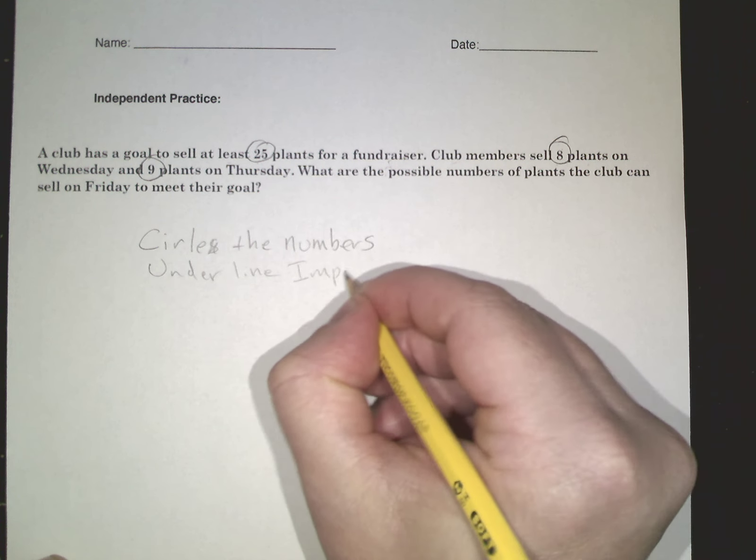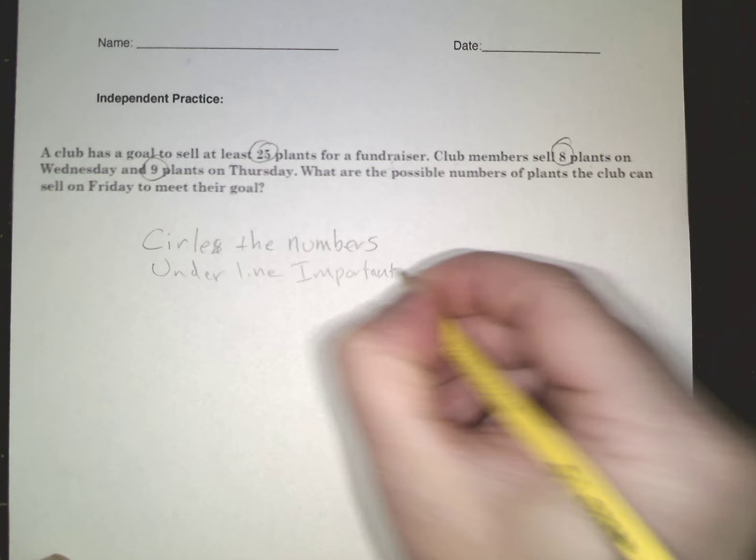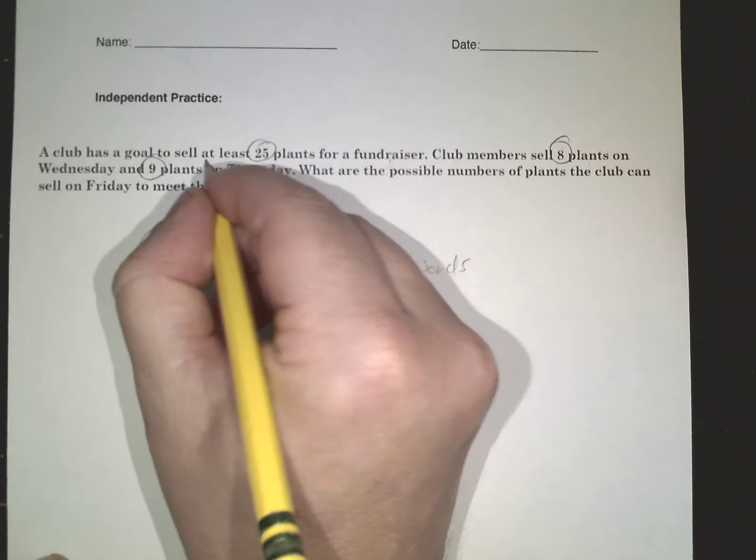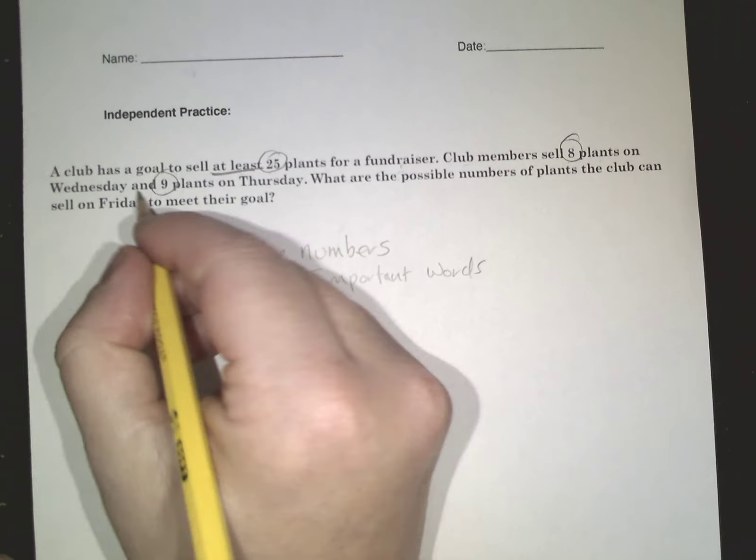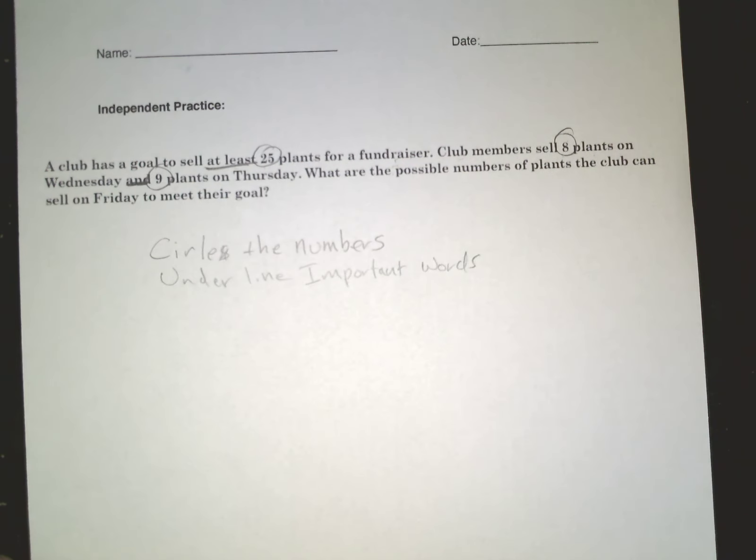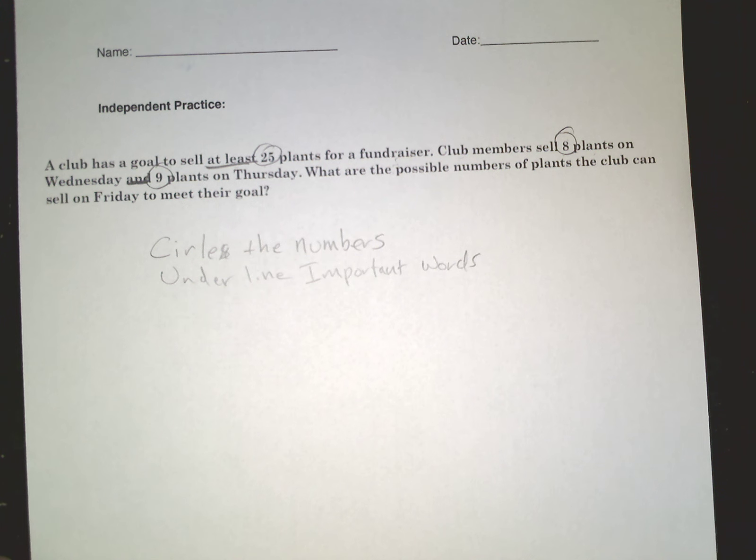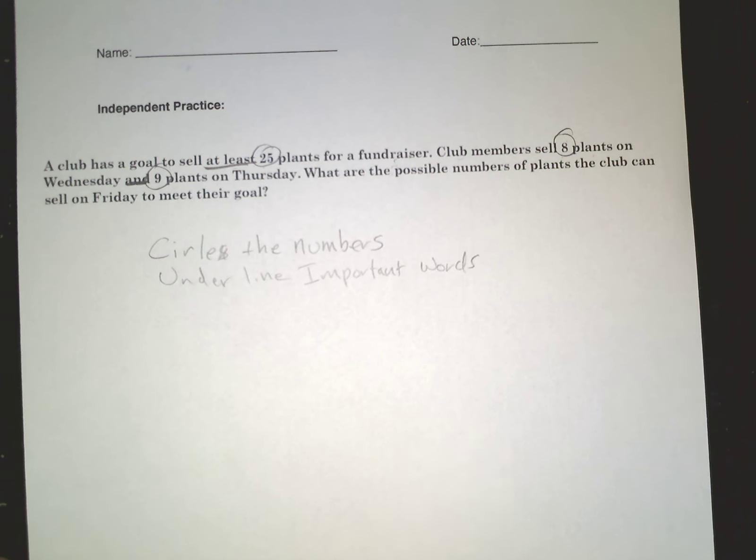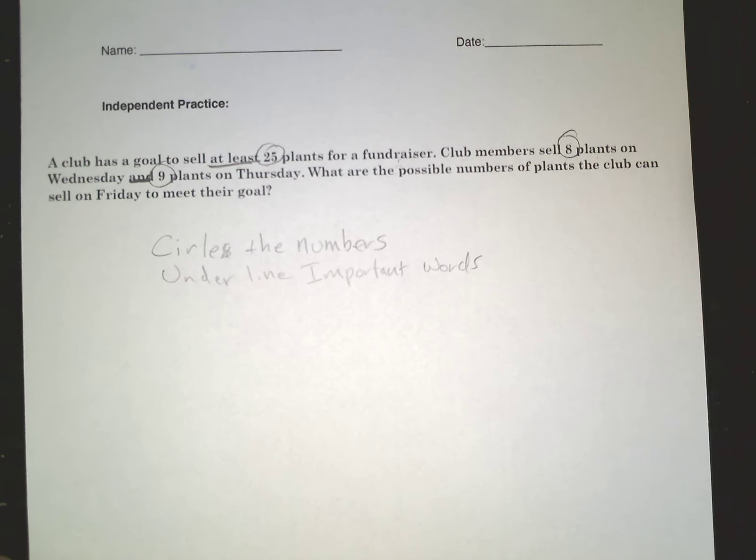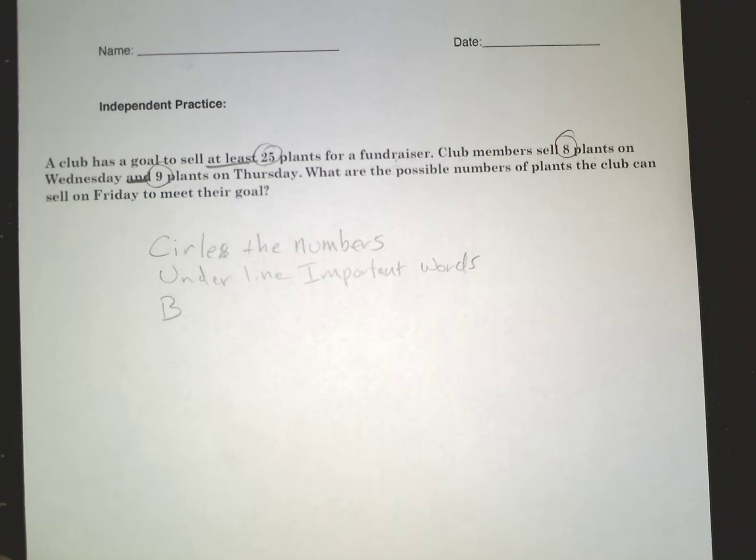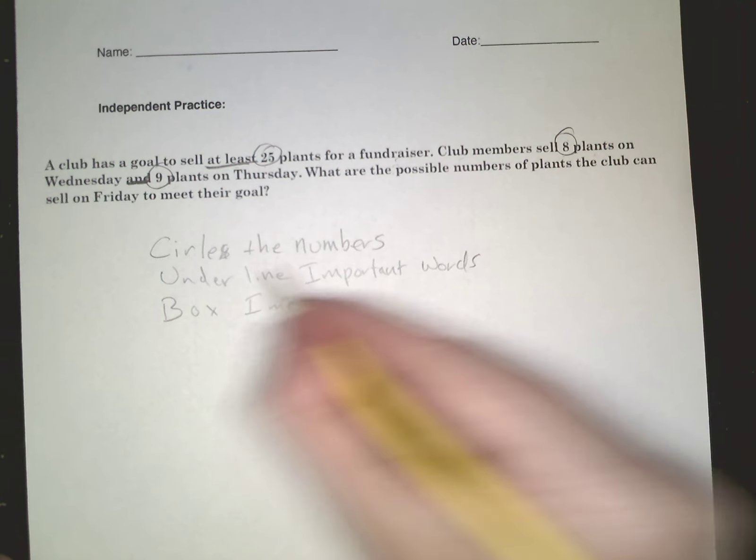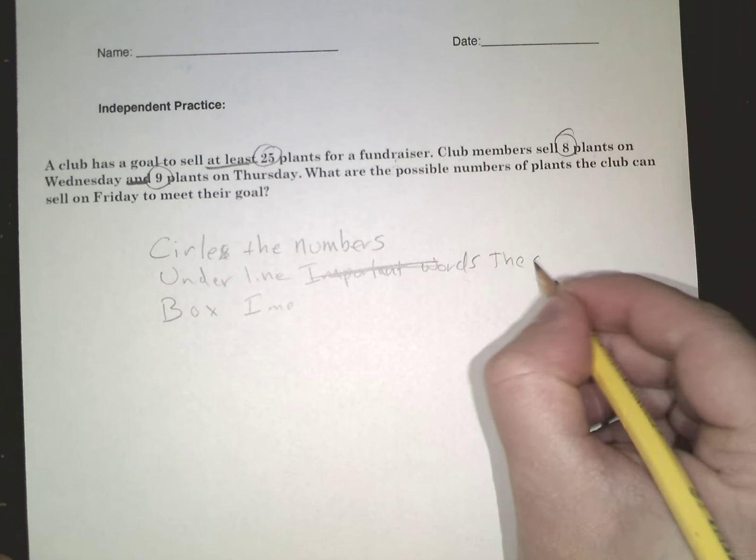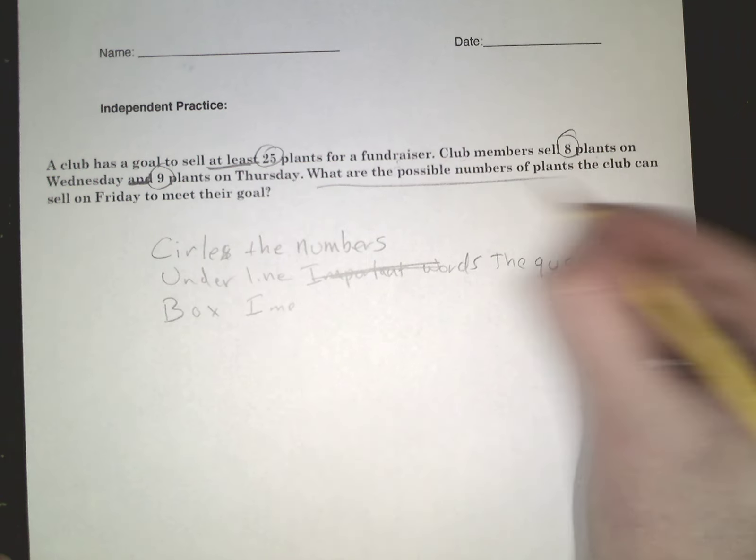Underline important words. I see some really good math words: at least, and in this case is a pretty good one, meet their goal. I did this wrong, underline the question. I'm rusty. So the question: what are the possible number of plants they can sell on Friday?